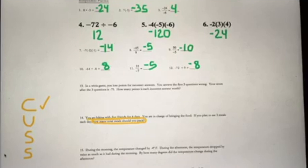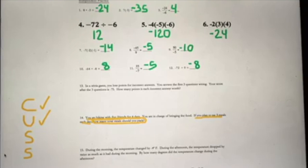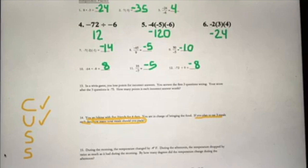Now we underline the information that's going to help us answer that question. You go hiking with five friends for four days — that sounds important. You're in charge of bringing the food. You plan to eat three meals each day. Now we've underlined the important information. What a lot of students do here is: I have five friends, we're going to eat three meals per day, so 5 times 3 is 15 meals per day. I'm going to be there for four days — 15 times 4 is 60.